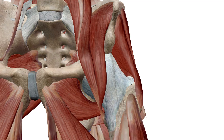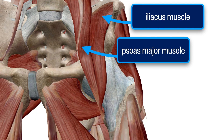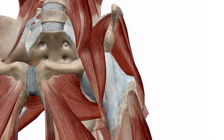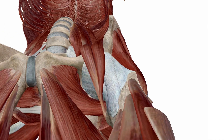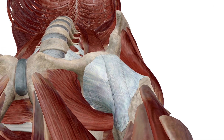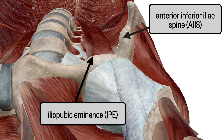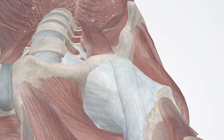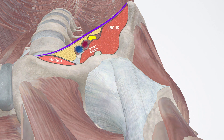The iliacus and psoas muscles originate in the pelvis and cross the brim of the pelvis to insert on the lesser trochanter. If we remove these, we see the pelvic brim with two prominent humps: the iliopubic eminence and the anterior inferior iliac spine. These will be important sonographic landmarks. The inguinal ligament stretches from the anterior superior iliac spine to the pubic tubercle, and within this compartment we find the femoral vessels and the iliacus muscle and psoas tendon.